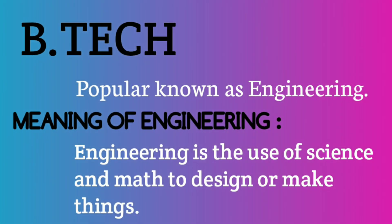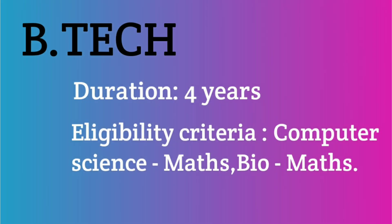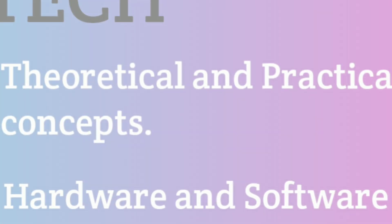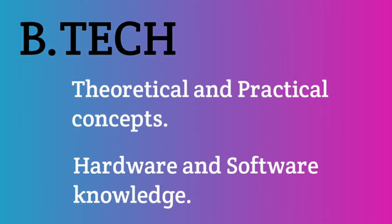The next course is B.Tech, which is an engineering course and a full degree program — it makes you a fully qualified engineer. This course is 4 years long. The eligibility criteria require a science background with Math, Computer Science, and related subjects being essential. Students from the Bio-Math group can also choose this course. There are many branches available, such as Electronics Engineering, Electronics and Communication Engineering, and Mechanical Engineering. In B.Tech you can learn both hardware and software.